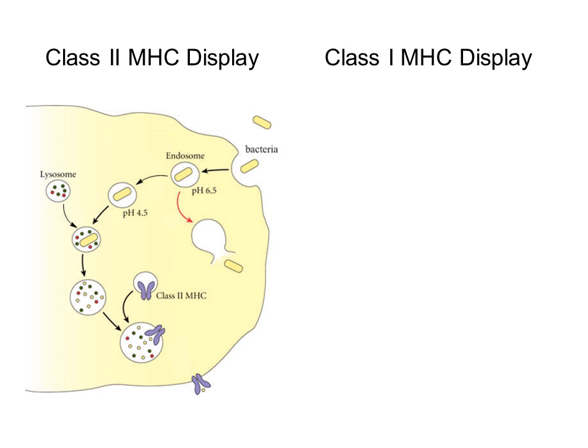When typical bacteria are taken up by a macrophage, they enter a vacuole which will fuse with lysosomes, resulting in destruction of the bacteria and degradation of its proteins. The resulting peptides are captured as class 2 MHC complexes and presented on the cell surface for binding to T cell receptors on helper T cells. Class 2 display is the normal way that the immune system detects bacterially infected cells.